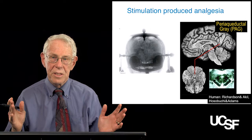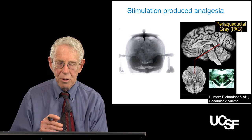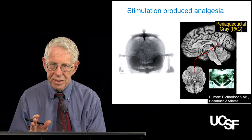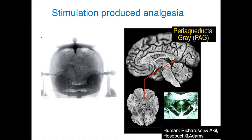The first discovery that led to our understanding of this modulatory pathway was stimulation-produced analgesia, first discovered in rats and then quickly applied to people. This slide shows a place in the central nervous system where you can place an electrode — the periaqueductal gray. This is a coronal section of the midbrain. A stimulating electrode can be placed stereotaxically in the human brain, as shown in this anterolateral x-ray projection of the human skull.